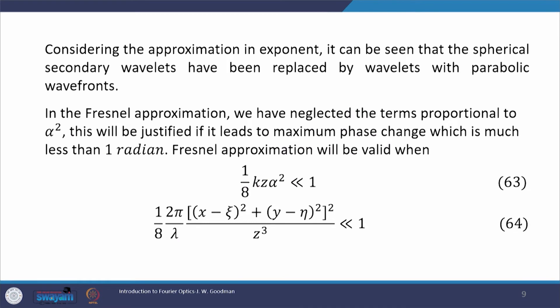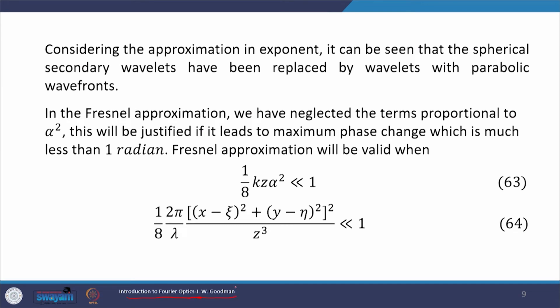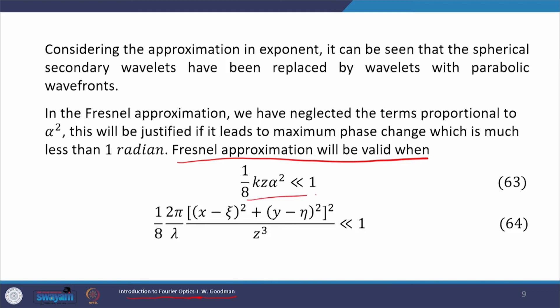In the Fresnel approximation, we have neglected the terms proportional to α², and this is justified if the maximum phase change it introduces is much less than 1 radian. Some authors say it should be smaller than 1 radian while others say smaller than π. Per the standard reference — Introduction to Fourier Optics by J. W. Goodman — the phase contribution from the α² term must be less than 1 radian for its neglect to be acceptable.